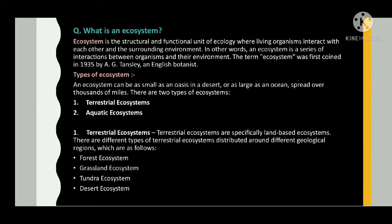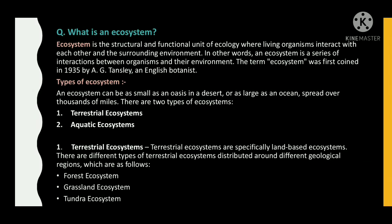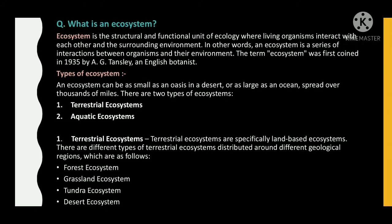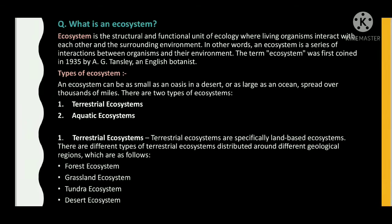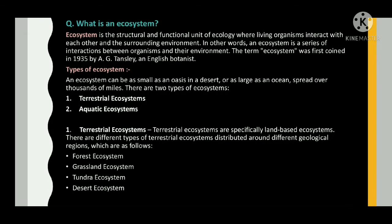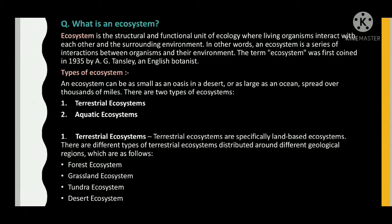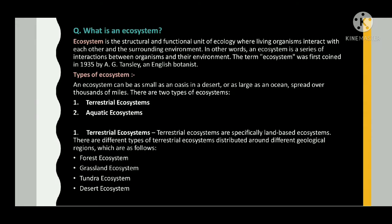Terrestrial ecosystems are specifically land-based ecosystems. There are different types of terrestrial ecosystem distributed around different geological regions, which are as follows: forest ecosystem, grassland ecosystem, tundra ecosystem, and desert ecosystem.